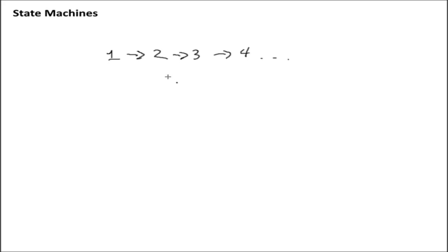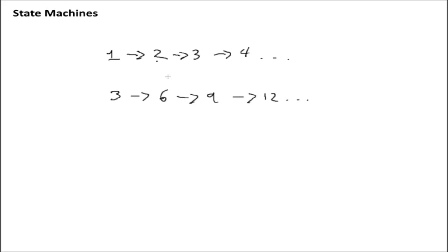For example, if you want to create a sequence that deals with every third number instead of every number, we can just take that counter register and run it through a multiplier, multiply everything times three. So this sequence then becomes three, goes to six, then nine, then 12, and so on. As long as the sequence has a pattern, we can almost always generate it using a counter register and some kind of combinational logic circuit.